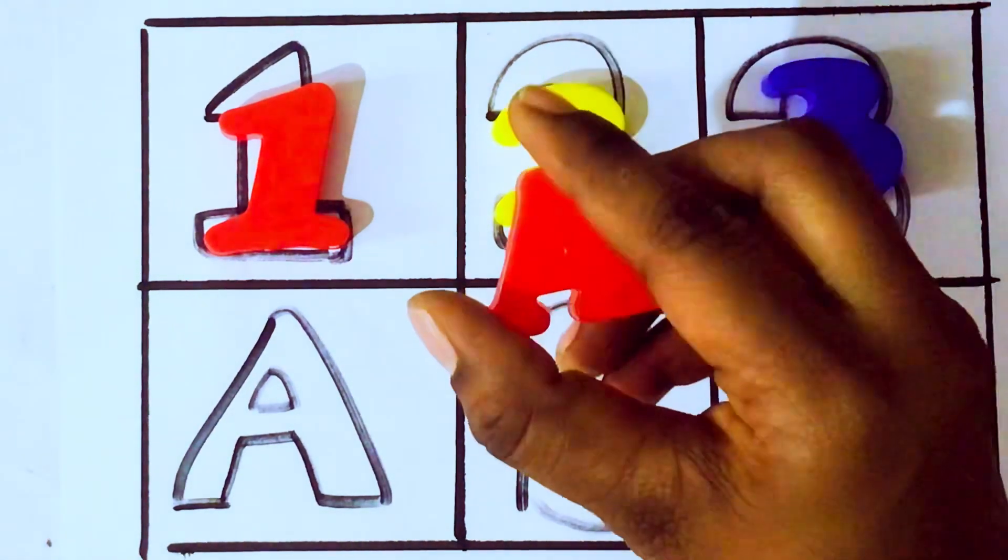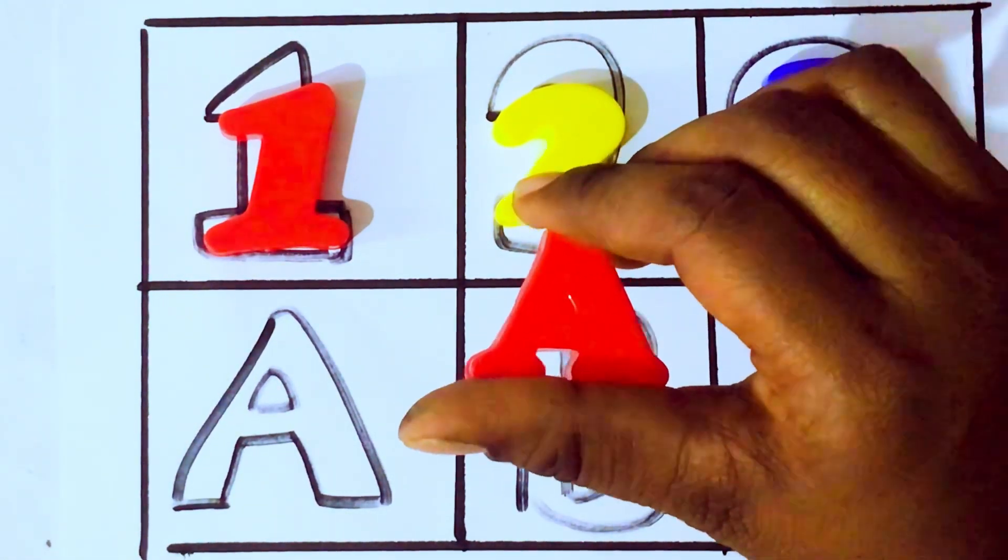And alphabets? A, A for Apple. A, P, P, L, E, Apple.